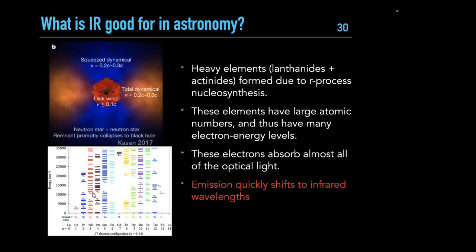Lanthanides and actinides have very large atomic numbers, meaning many electrons and many electronic energy levels. The number of transitions scales roughly as n-squared, so electrons have so many transitions that they absorb a lot of the incident light from the kilonova — a process called line blanketing. Optical light is absorbed more than infrared, so kilonova emission quickly shifts to infrared wavelengths while the optical is strongly suppressed.